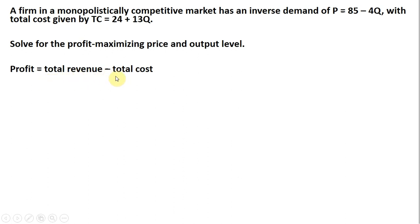Profit equals total revenue minus total cost, where total revenue is price times quantity. The price is 85 minus 4Q, and we multiply that by the quantity of output. Then we subtract out total cost, 24 plus 13Q.